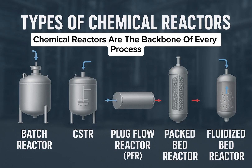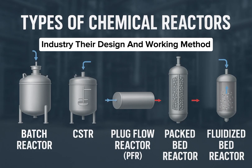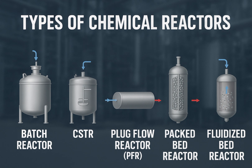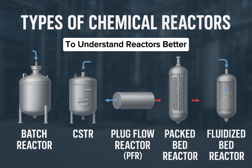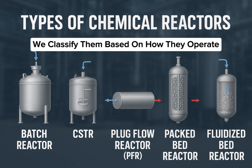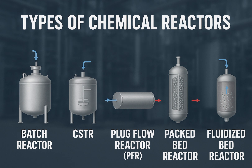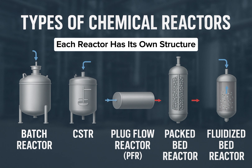Chemical reactors are the backbone of every process industry. Their design and working method decide how efficiently raw materials convert into final products. To understand reactors better, we classify them based on how they operate and how materials flow through them. Each reactor has its own structure, advantages, and industrial use.